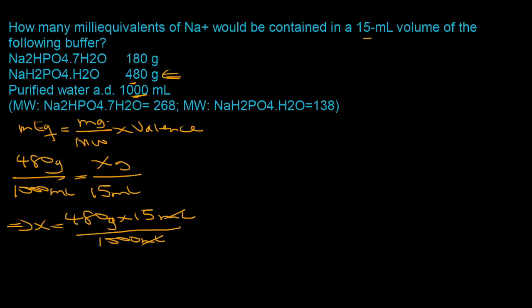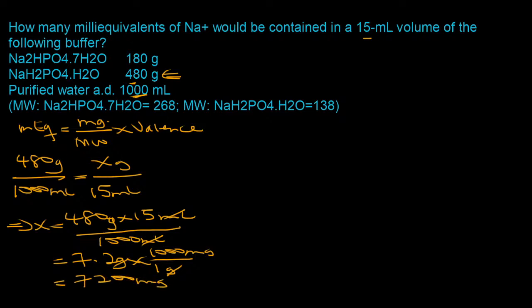Converting 7.2 grams to milligrams: 7.2 g × 1,000 mg/g = 7,200 milligrams. The molecular weight for the monohydrate is given as 138.